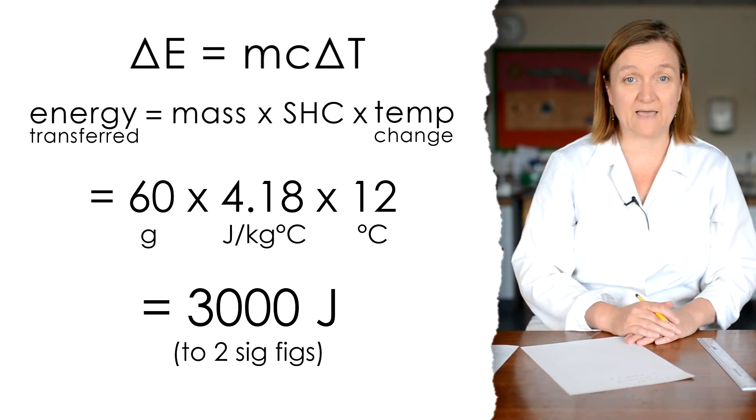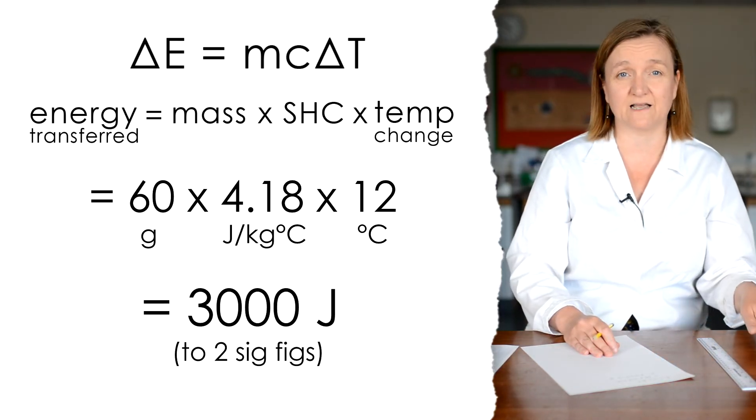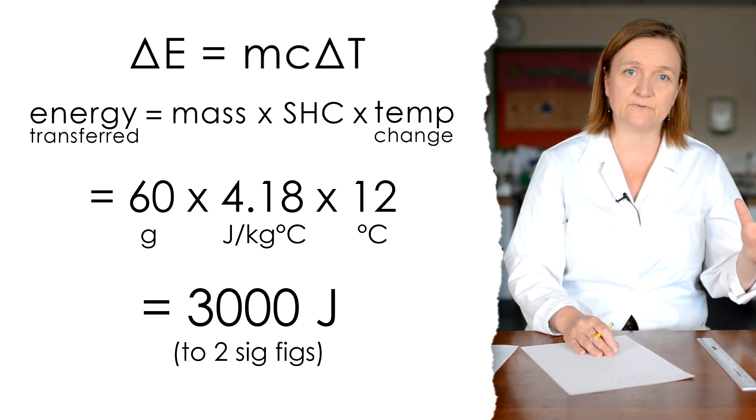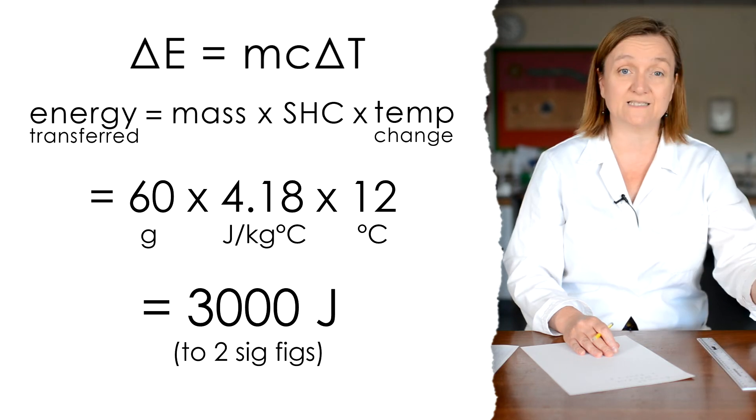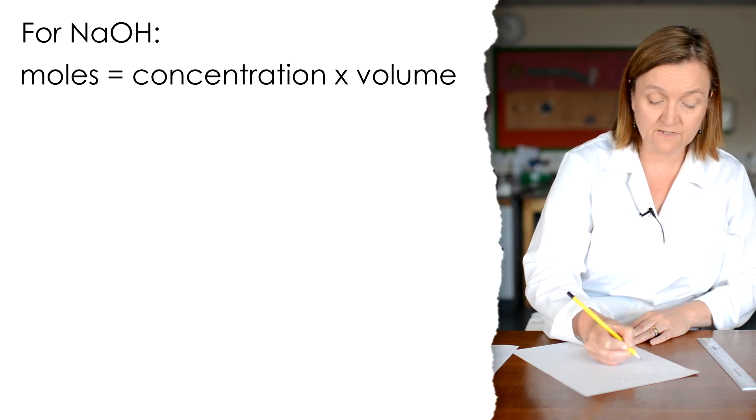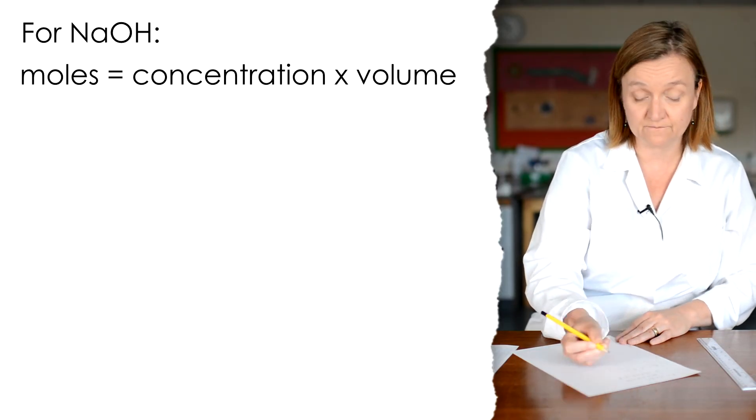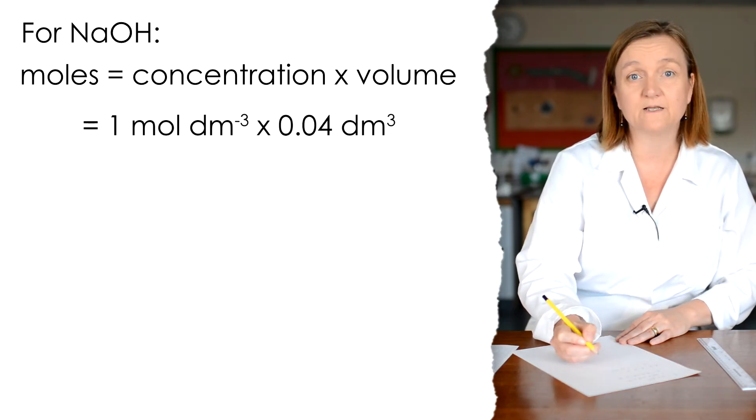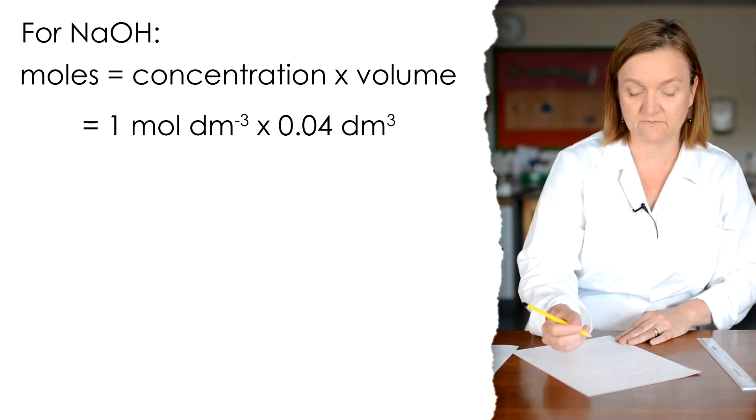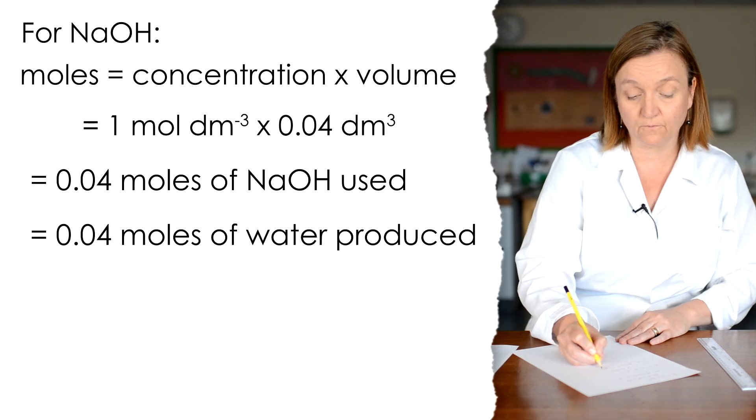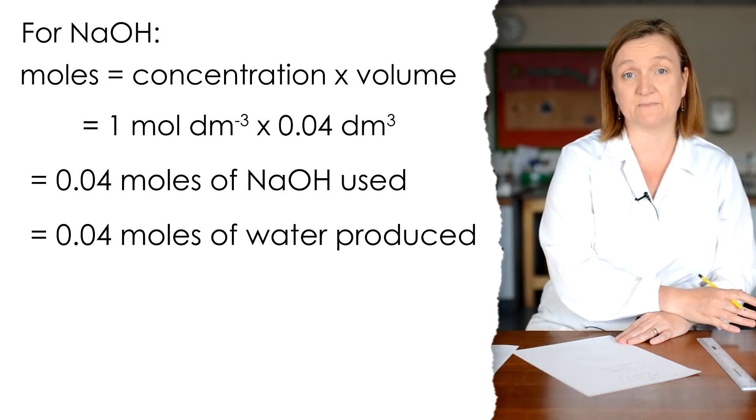If you remember, each solution was one molar, and I took into account the fact that I was going to have twice as much sodium hydroxide as acid. So if I take my sodium hydroxide, the number of moles is concentration times volume. The concentration was 1, and the volume was 0.04 decimetres cubed, 40 centimetres cubed. So I've made 0.04 moles of water from my sodium hydroxide.